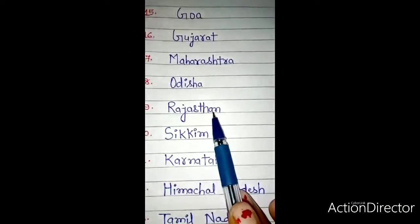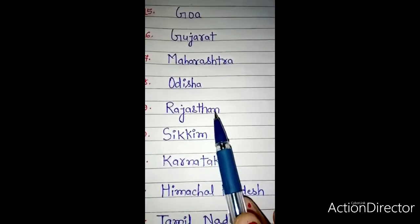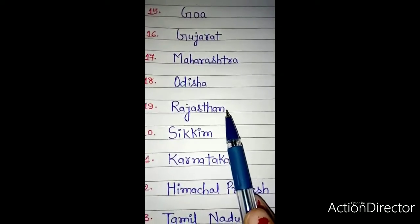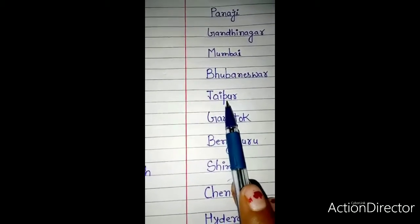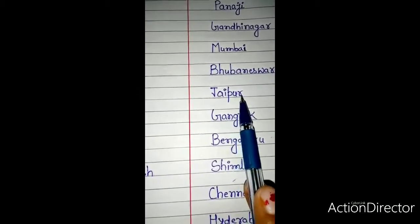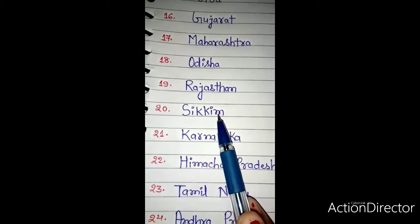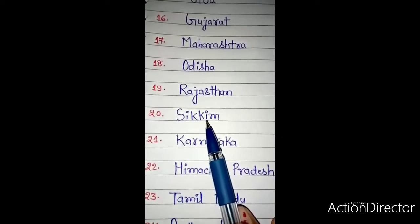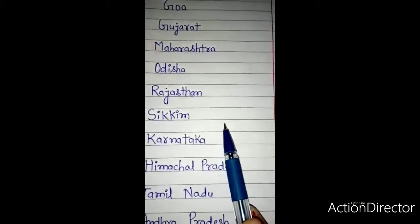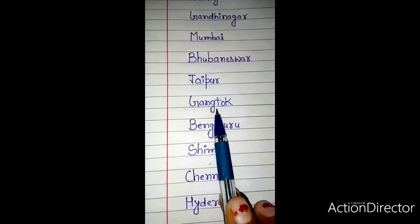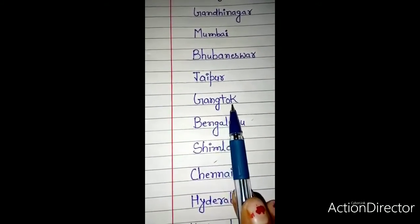Number 19: Rajasthan — R-A-J-A-S-T-H-A-N. The capital of Rajasthan is Jaipur — J-A-I-P-U-R. Number 20: Sikkim — S-I-K-K-I-M. The capital of Sikkim is Gangtok — G-A-N-G-T-O-K.